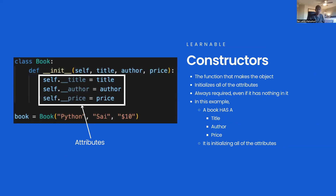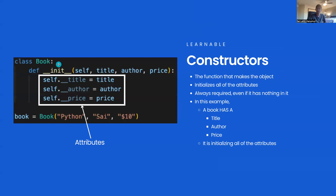Let me explain how it all works. We have discussed classes and objects. First we define a class as 'Book' followed by a colon — that's basically telling Python that you are defining that class. Inside it, you define `__init__`, which is something called a constructor. The constructor is a function that makes the object — it initializes all of the attributes and is always required.